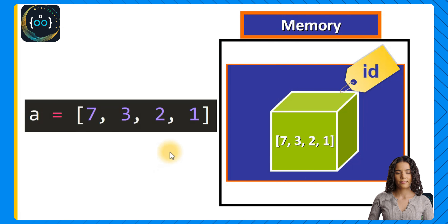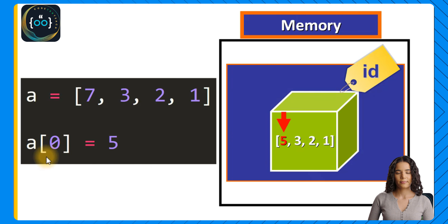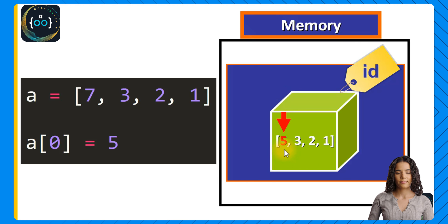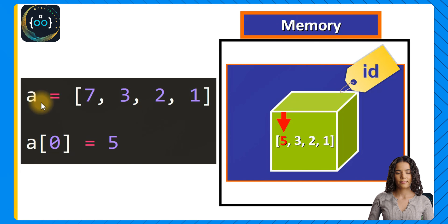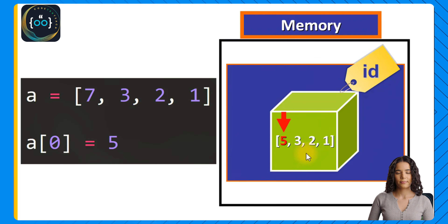If we define a list with certain elements and then update the value at a particular index, and print the list after making this modification, we see the list updated — instead of 7 we have the value 5. What happens behind the scenes is that we are storing the list object in memory, and when we change it at that index, we are changing the actual object in memory — we are mutating it, making the change directly to the object. So the variable a will now reference the updated object in memory.